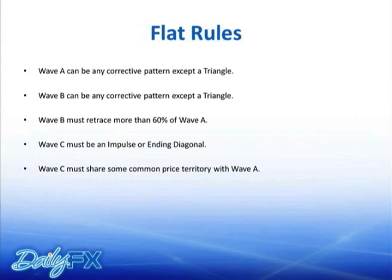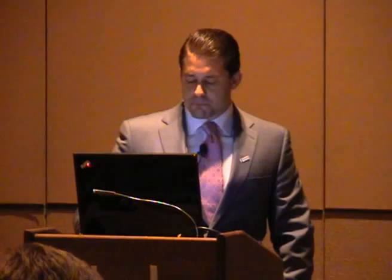Flats: wave A usually goes 3-3-5 or can be a triangle, 3-5-5. The wave C must be an impulse or diagonal. A lot of people make too much about whether it's a flat or a complex correction — 3-3-3. It really doesn't matter; bottom line is it's the end of a correction. Trading flats is somewhat dangerous because you tend to break the bottom of wave A. These are the kind of corrections that end up stopping everybody out.